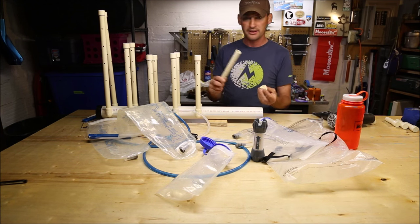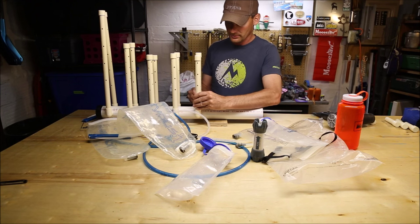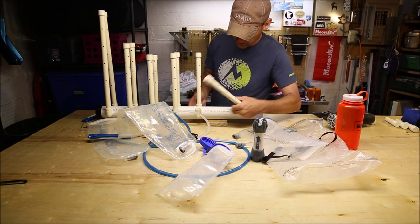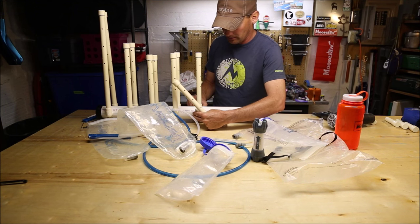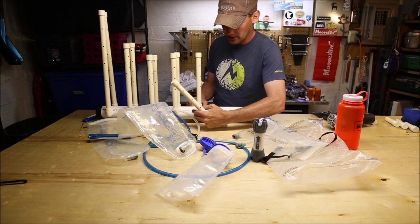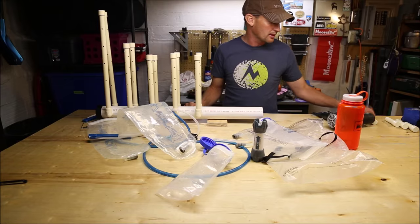I didn't really even glue anything together. These tops come off, these come out. The only thing I did glue in were these elbows. Once I drilled into the side of this PVC pipe, I didn't want them to move around and the hole was a little bit bigger than these actual fittings, so I kept those glued in. But everything else is kind of interchangeable.